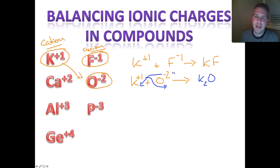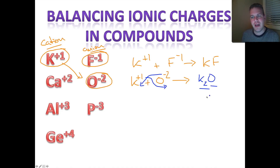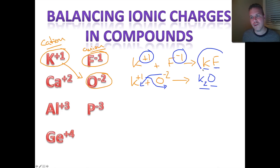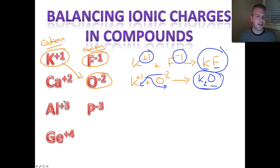We have a total of two negative charges, which means we need two positive charges to balance them out. That's why we have two potassium and one oxygen — oxygen has a charge of negative two. For potassium fluoride earlier, I didn't write any subscripts because potassium ion and fluoride both had a charge of one, so the total charge was already zero.